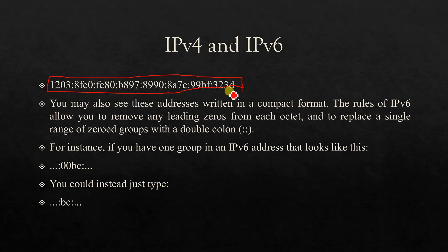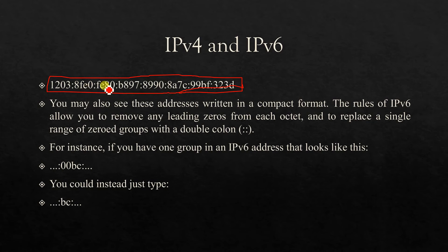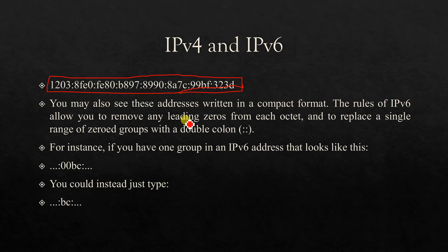Then we use IPv6. You are going to use an address. If you want to use version 6, you can use a version 6 IP address. You may also see these addresses written in a compact format. The rule of IP version 6 allows you to remove any leading zeros.